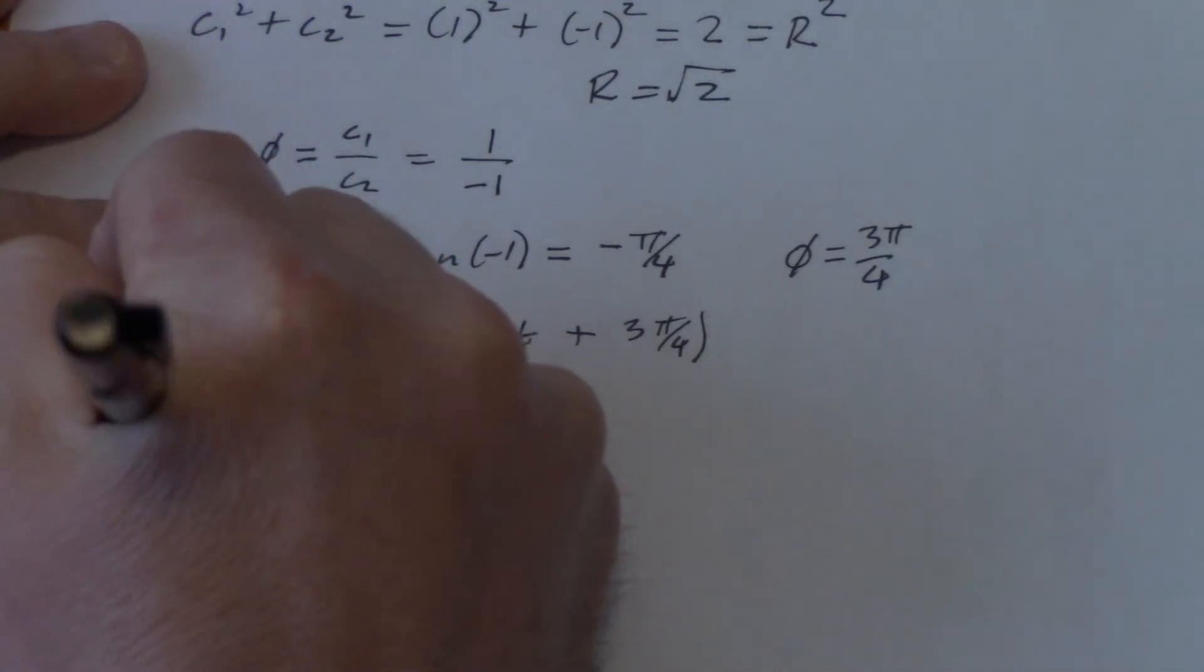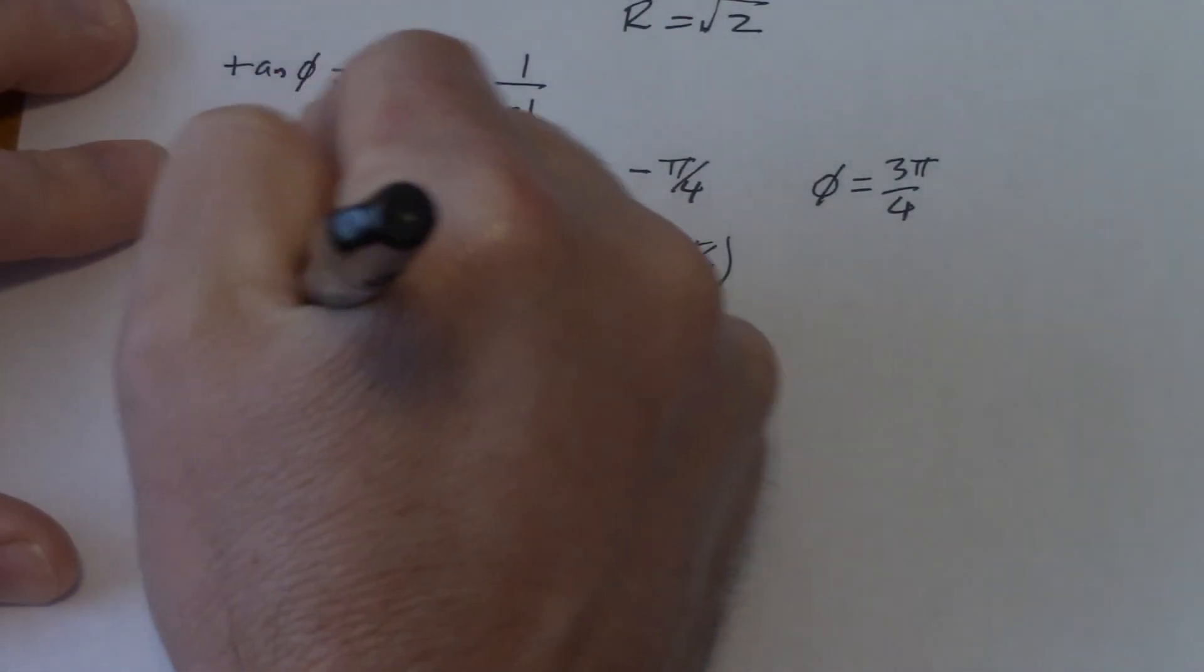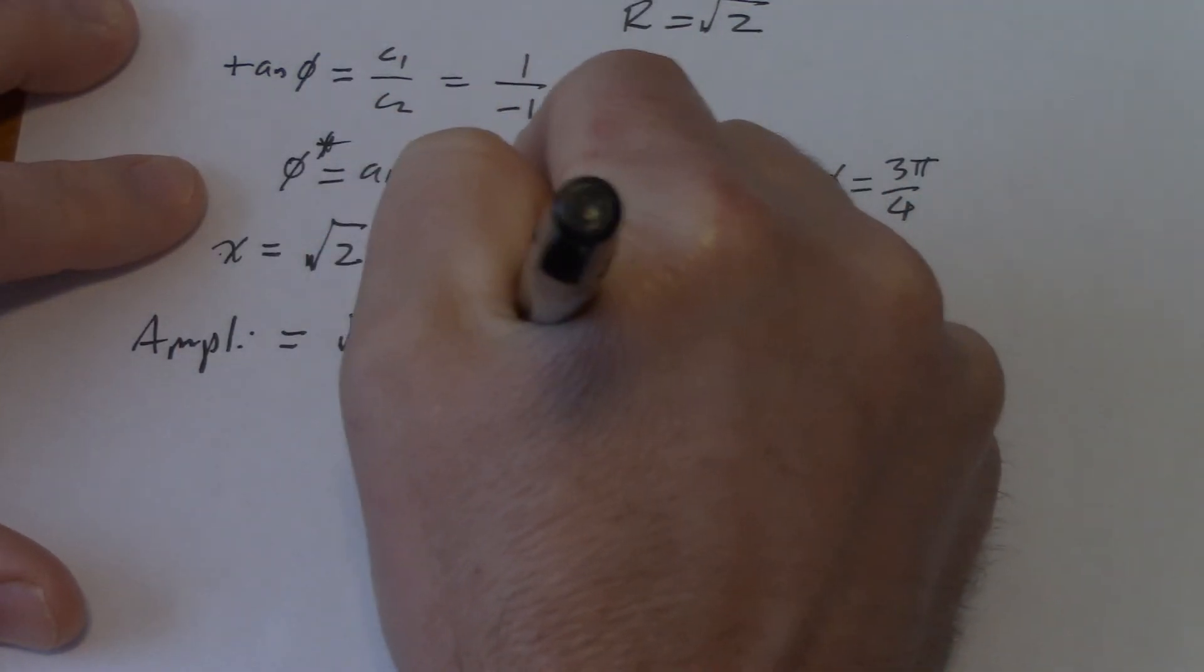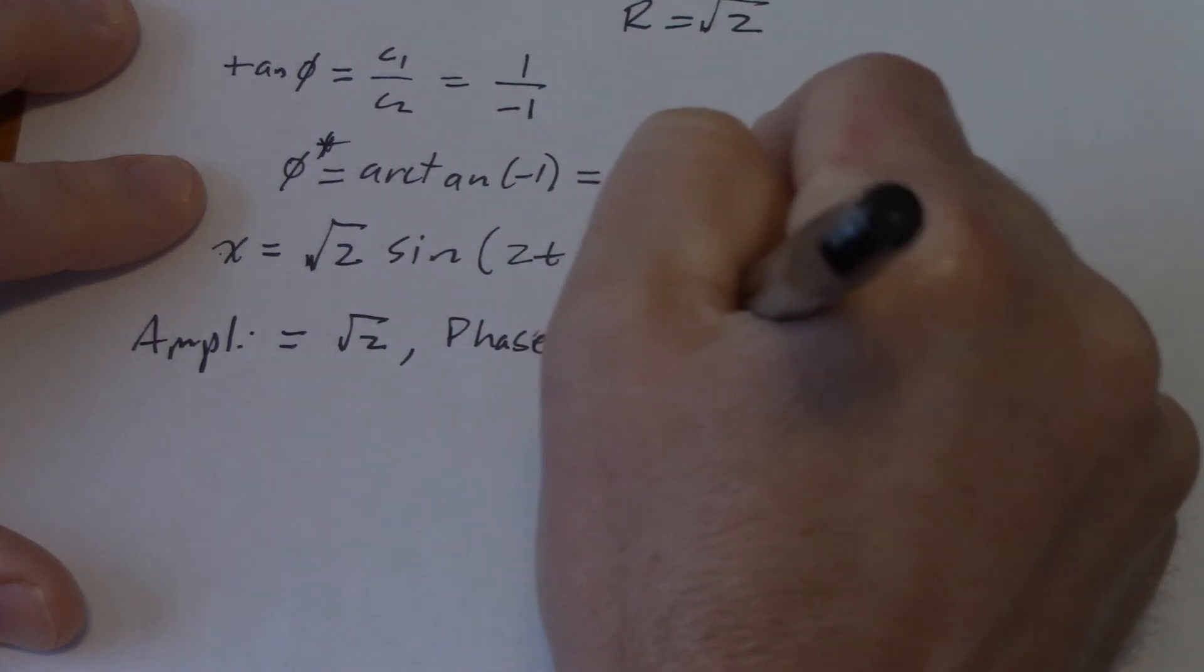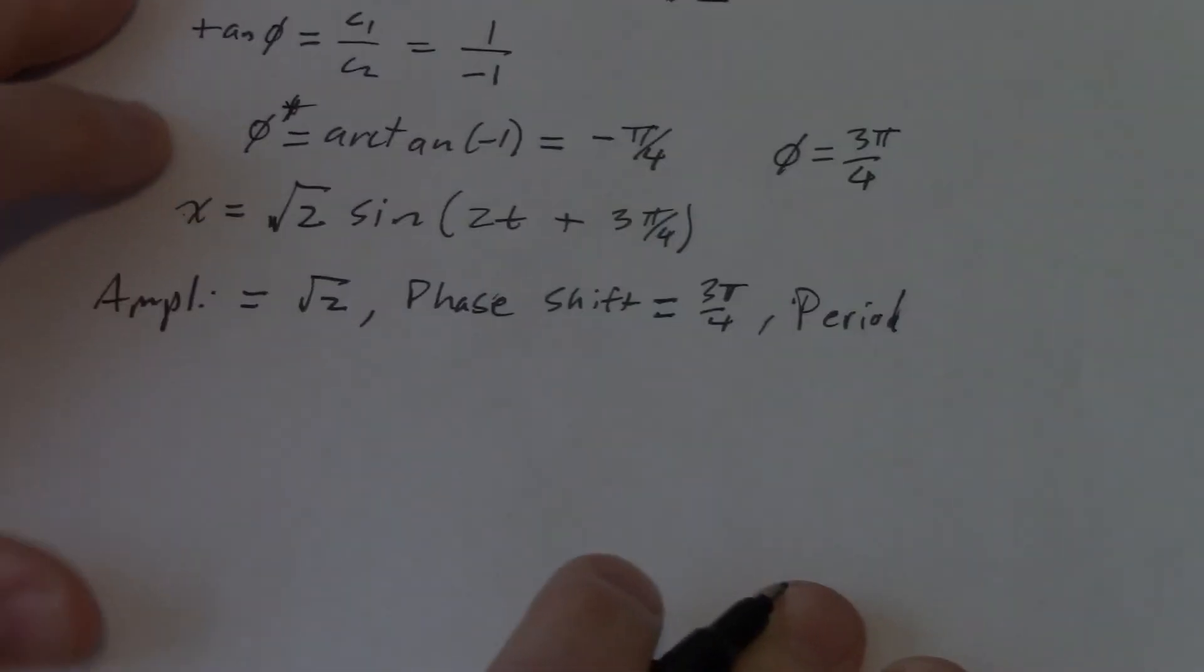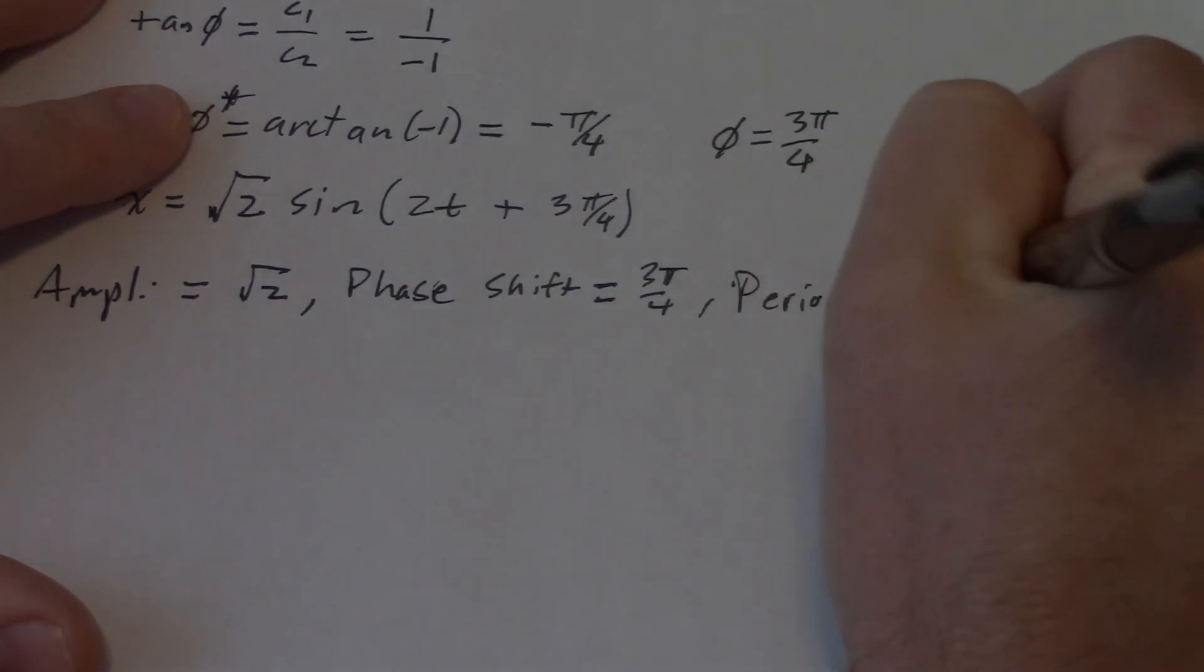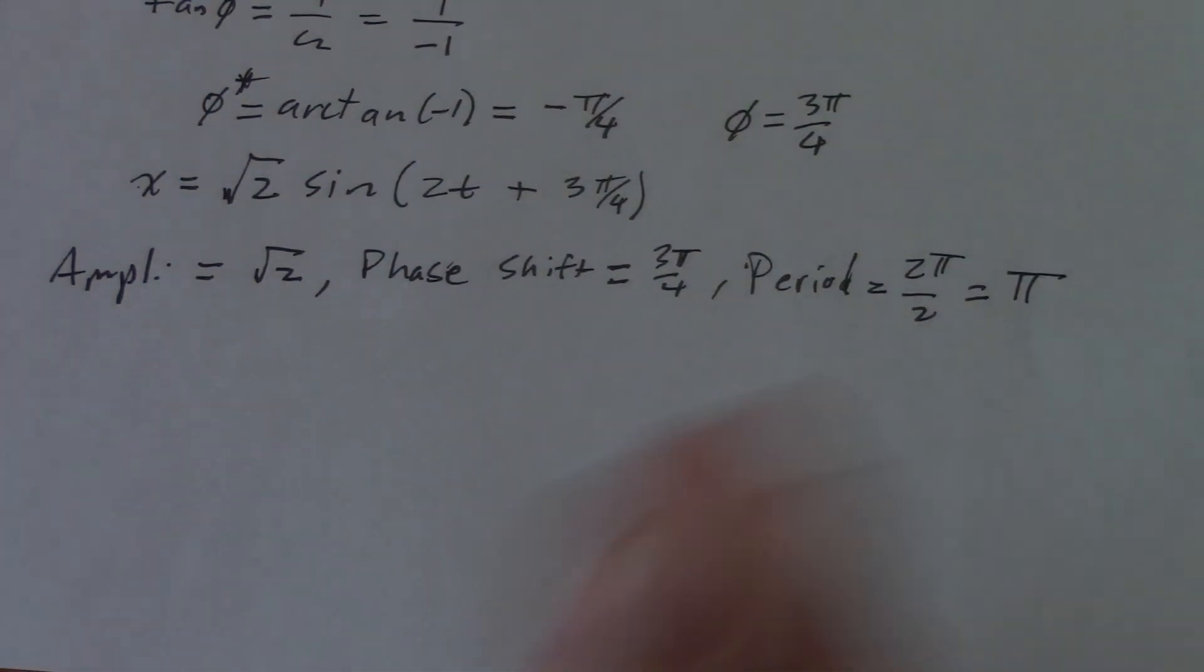Okay, my amplitude is root 2. My phase shift is 3 pi over 4. My period, that's 2 pi over 2, which is pi. And, of course, I didn't ask, but frequency would be 1 over that, so 1 over pi. Okay.